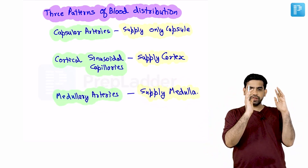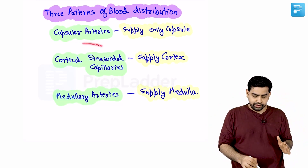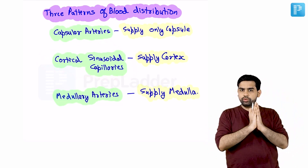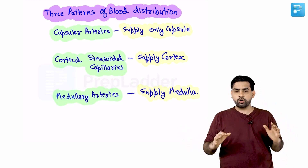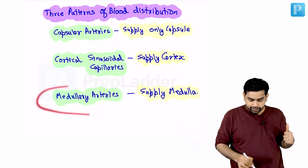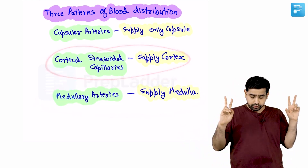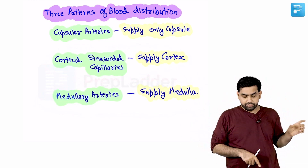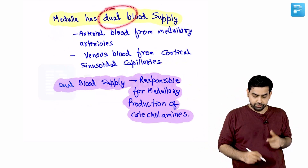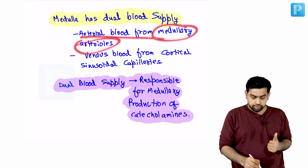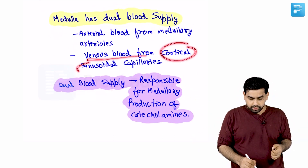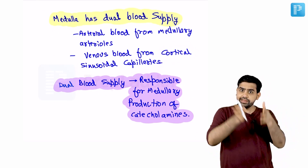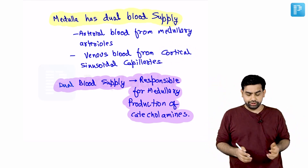The cortical sinusoidal capillaries, after supplying the cortex, coalesce and then pass to the medulla. This is how the medulla has a dual blood supply: direct arterial blood from the medullary arteries, and venous blood from the cortical sinusoidal capillaries. These cortical sinusoidal capillaries join together, enter the medulla, and then drain into the adrenal vein into the systemic circulation.